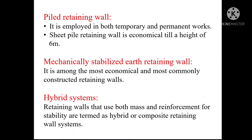The mechanically stabilized earth (MSE) retaining wall is among the most economical and most commonly constructed retaining walls. It is supported by selected fills and held together by reinforcement, which can be either metallic strips or plastic meshes. Types of MSE retaining walls include panel, concrete block, and temporary earth retaining walls.